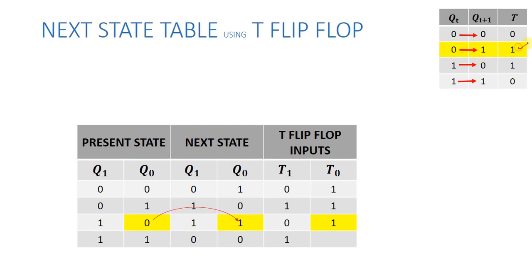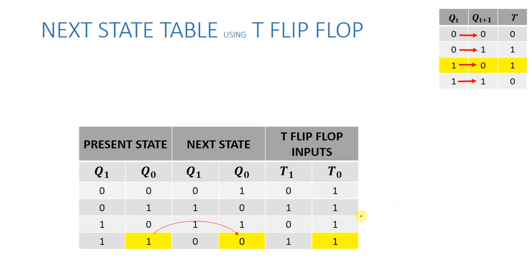Present state 1, next state 1, we give 0. Next state is 1, we want to give 1. Present state 1, next state 0, we want to give 0. This is our T flip-flop table.